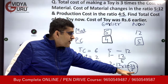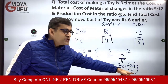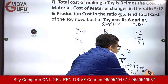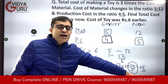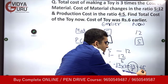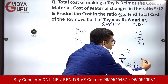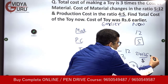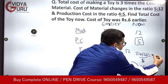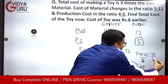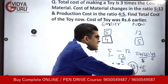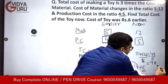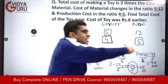Adding the new material cost and production cost: 24 by 5 plus 5. Taking LCM as 5, we get 24 plus 25, which is 49 upon 5. That works out to Rs. 9.80. So without assuming any variables X, Y, A, B, C, I have taught you how to solve the question.